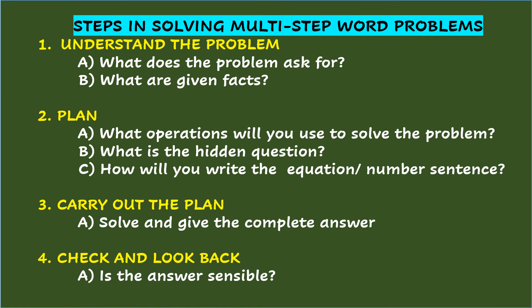These are the steps that will serve as your guide in solving multi-step word problems. Number one: Understand the problem — What does the problem ask for? What are the given facts? Number two: Plan — What operations will you use? What is the hidden question? How will you write the equation or number sentence? Number three: Carry out the plan — solve and give the complete answer. And the last step: Check and look back — Is the answer sensible?